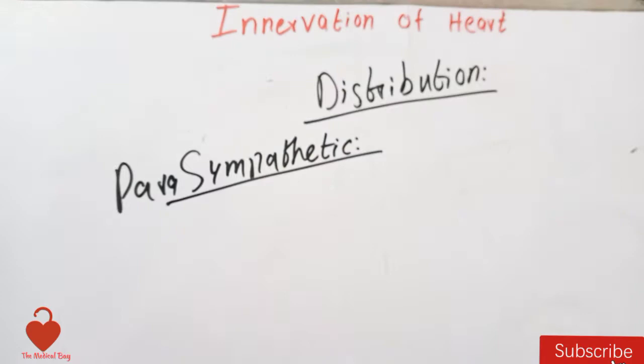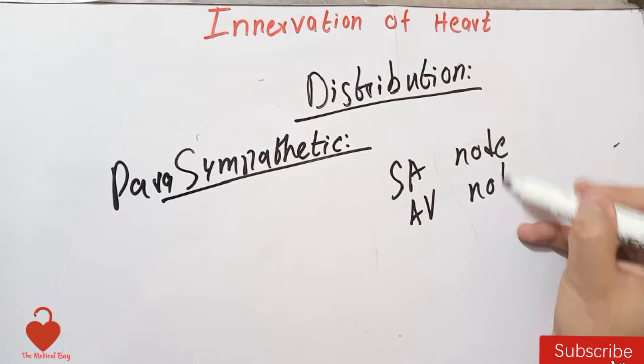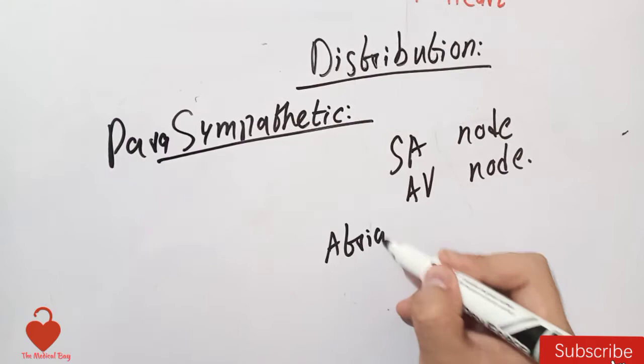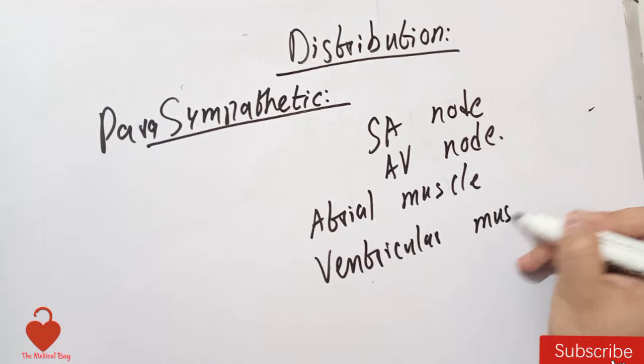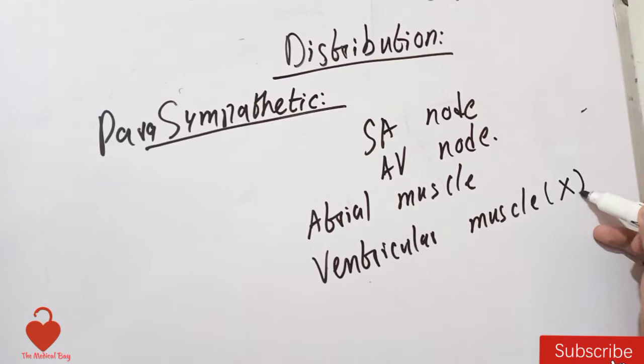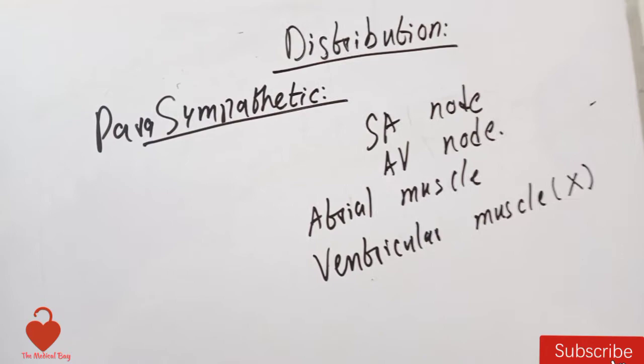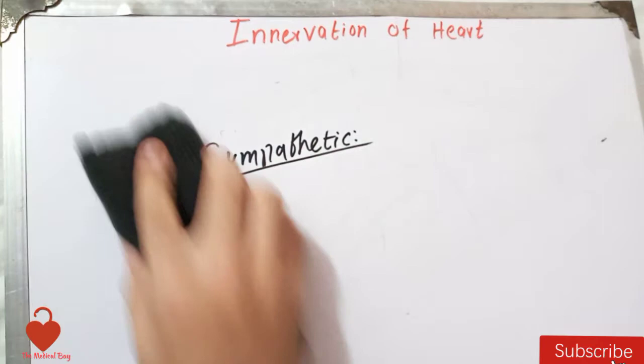In the case of the parasympathetic, the main innervation is to the SA node and the AV node, but there is also some lesser stimulation to the atrial muscle. The very important thing to remember is that there is almost no parasympathetic innervation to the ventricular muscle. The ventricular muscle is innervated only by the sympathetics.